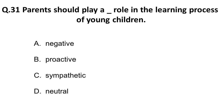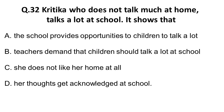The thirty-first question: a parent should play a what kind of role in the learning process of young children? Option negative is ruled out — no parent would play a negative role. Sympathetic role also won't work. Neutral also will not help the overall growth of the child. So the correct answer is proactive — they should be proactive in the learning process of their young children.